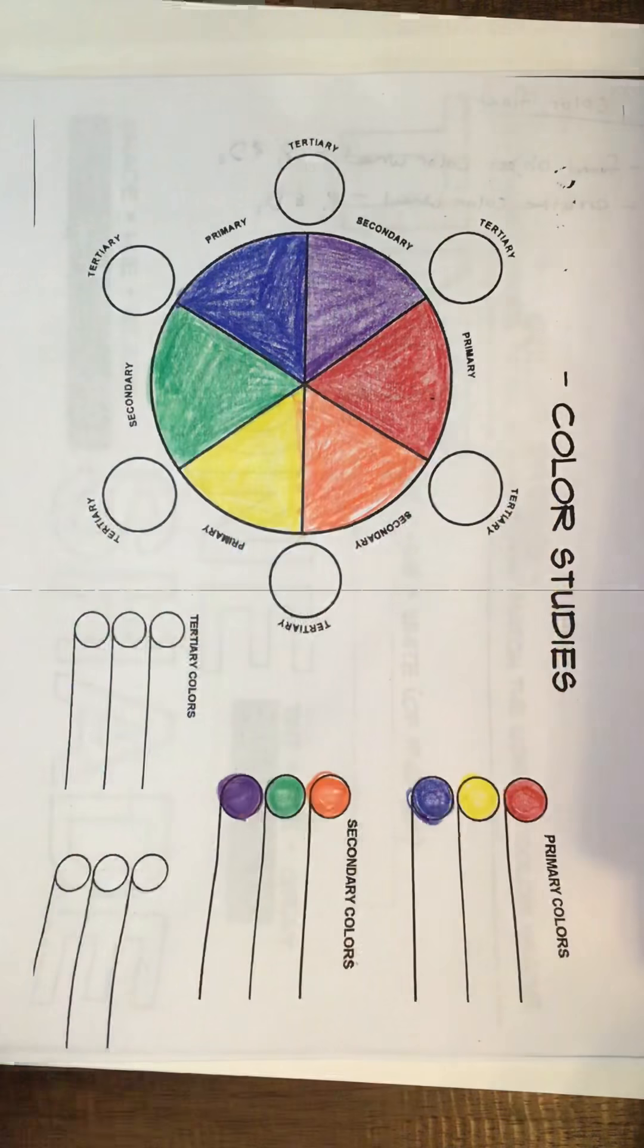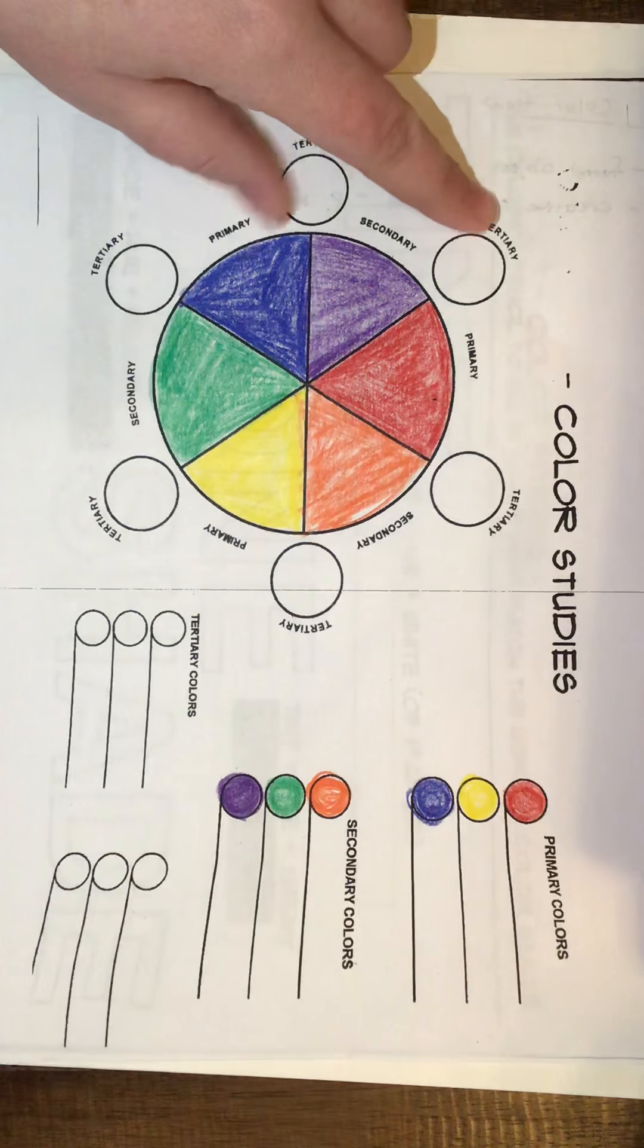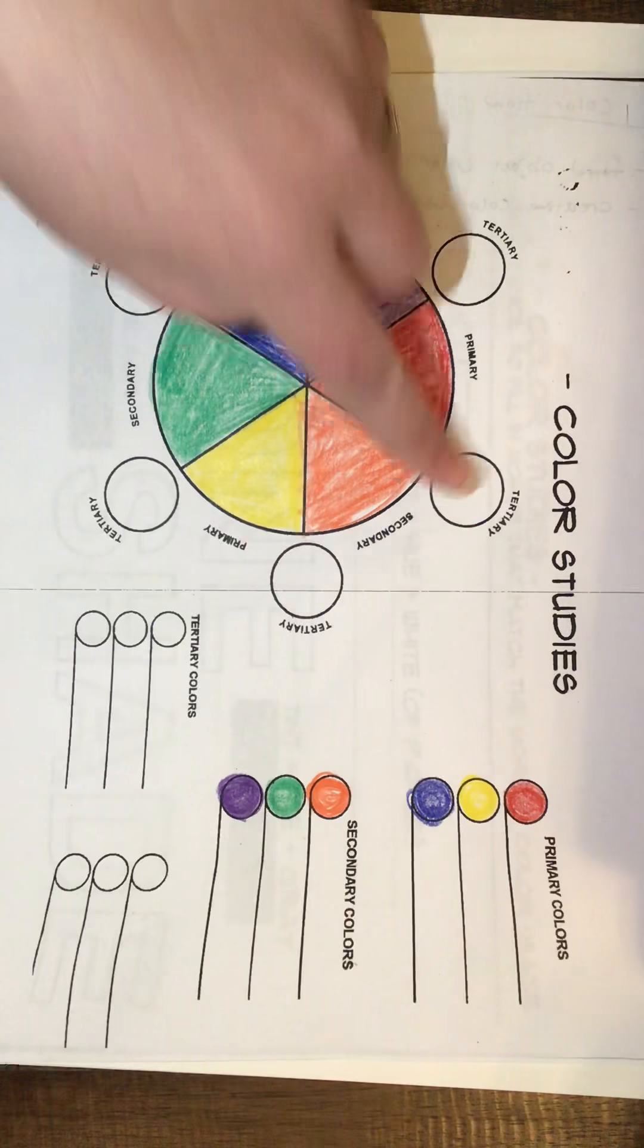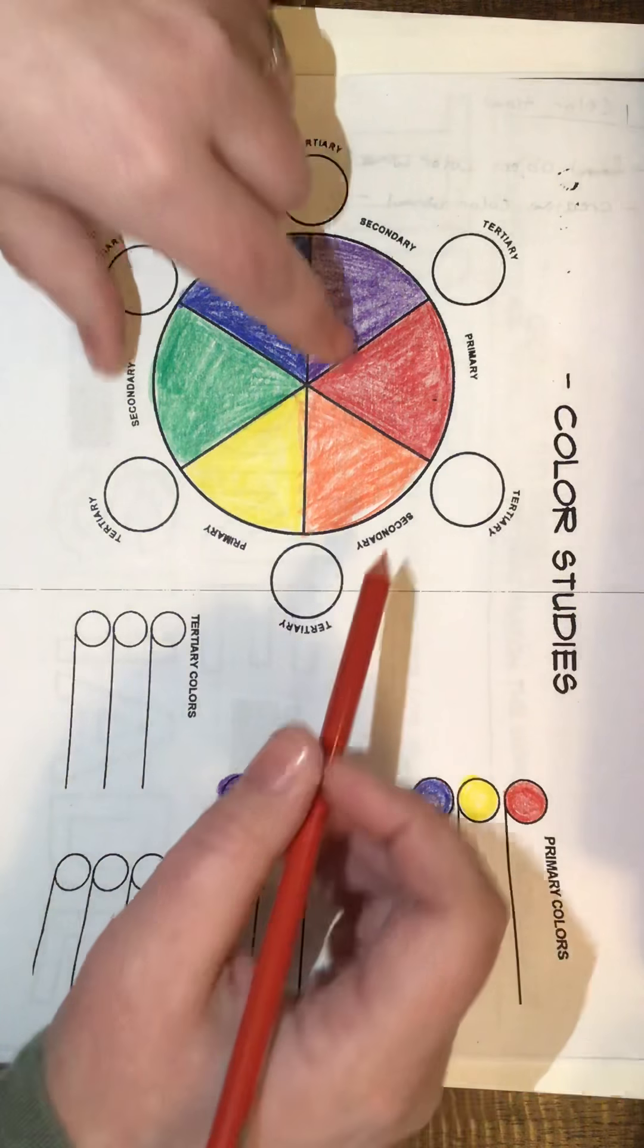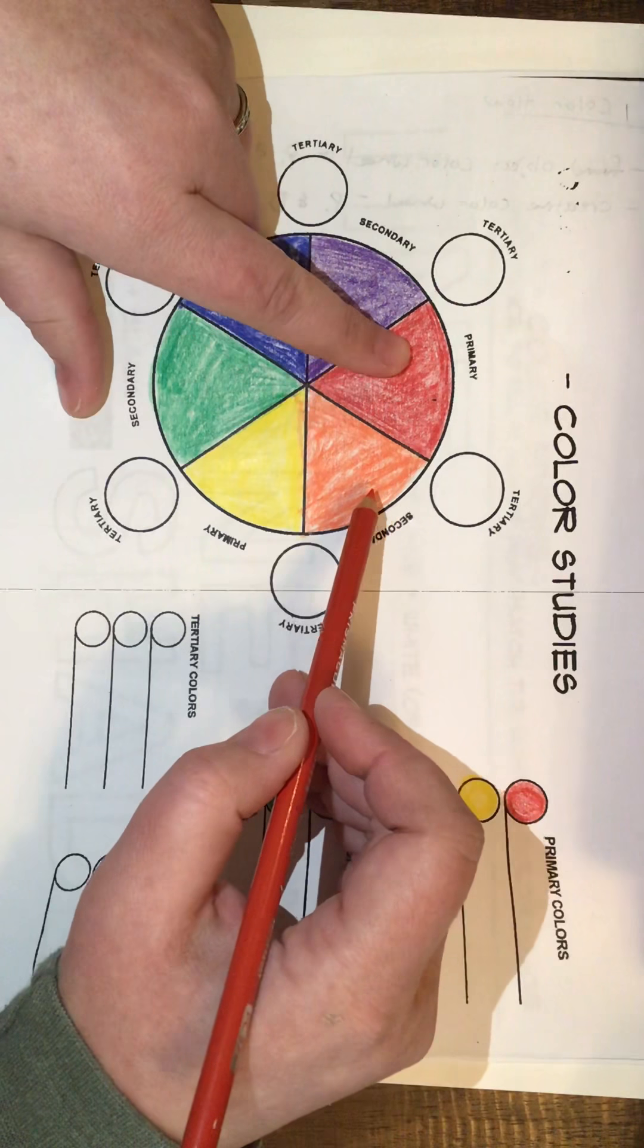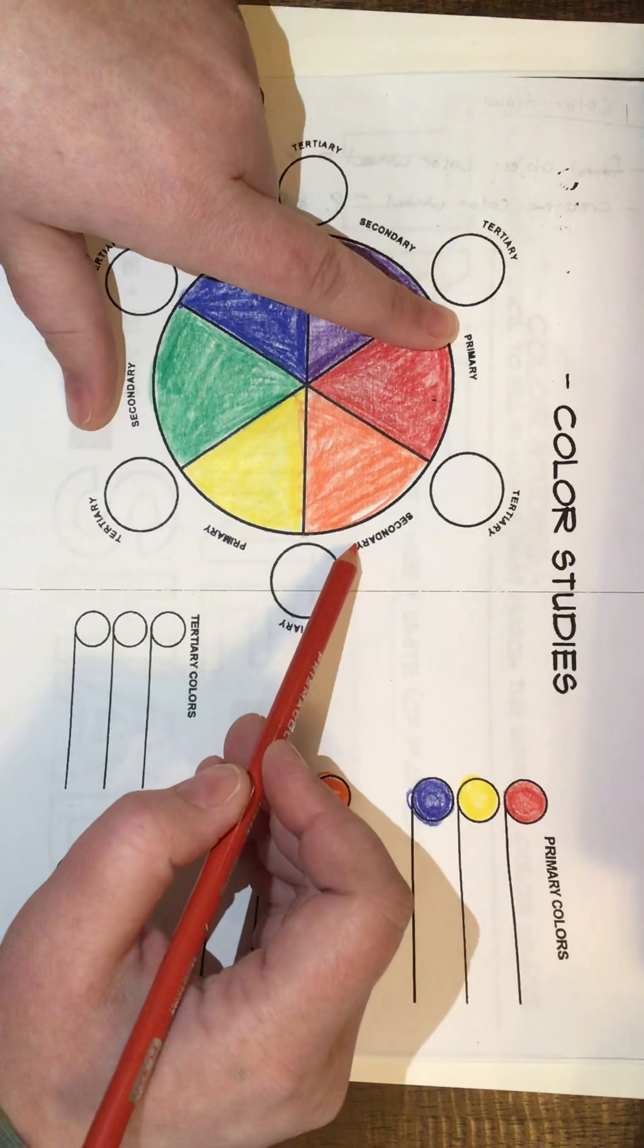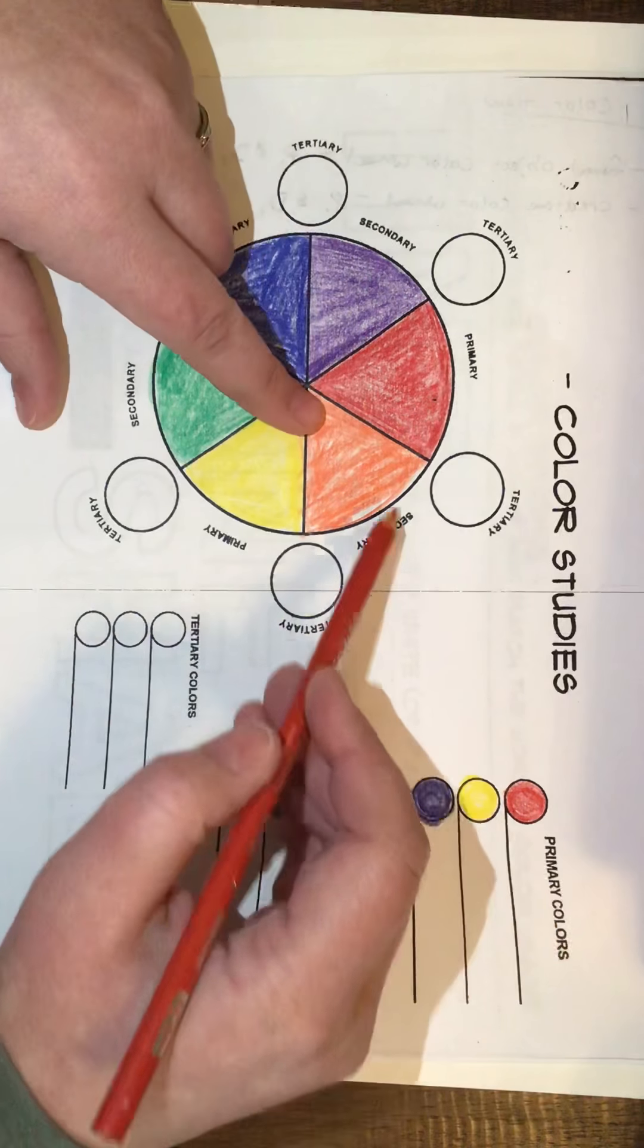So the new colors that we're going to learn about today on this sheet are something called tertiary colors. On your paper, it's the little circles that are actually outside of the color wheel here. A tertiary color looks scary, you're like whoa, there's more colors. Of course there are. But here, a tertiary color is only a mixture between a primary and a secondary. So if you think of primary being one, secondary being two, think of tertiary being a third, or three.